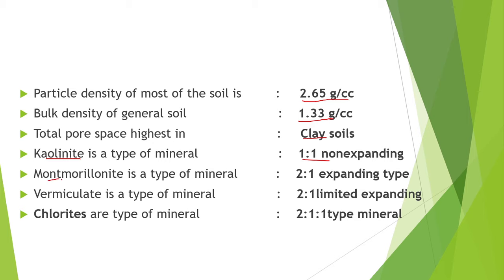Next point is, montmorillonite is a type of mineral. It is a 2:1 expanding type of mineral. Silicate clays are classified into expanding and non-expanding type. Montmorillonite has Van der Waals force of attraction, so the force of attraction is loose — this is why we call it an expanding type of mineral. It has two silica and one aluminum sheet.